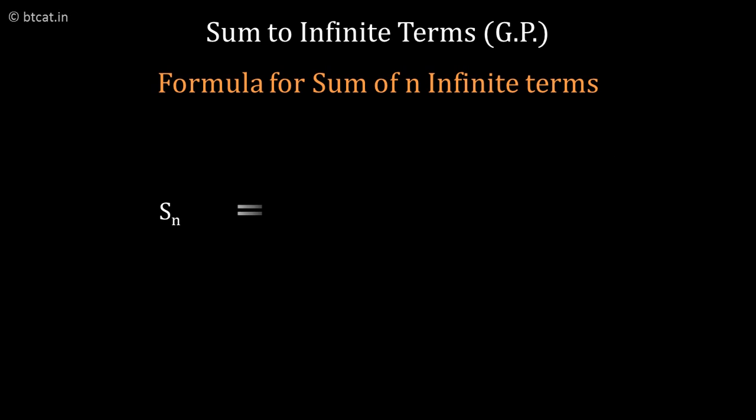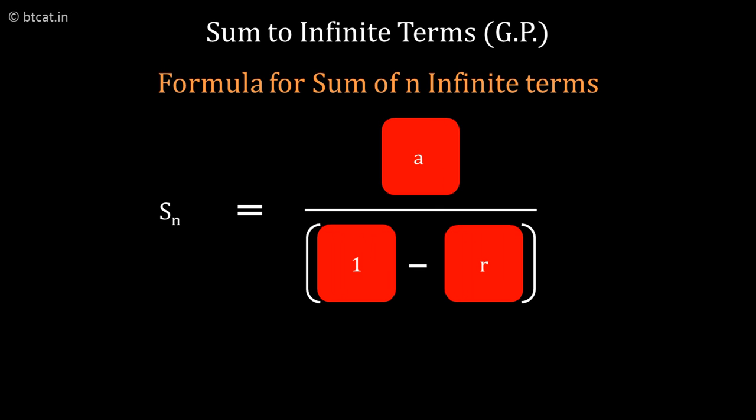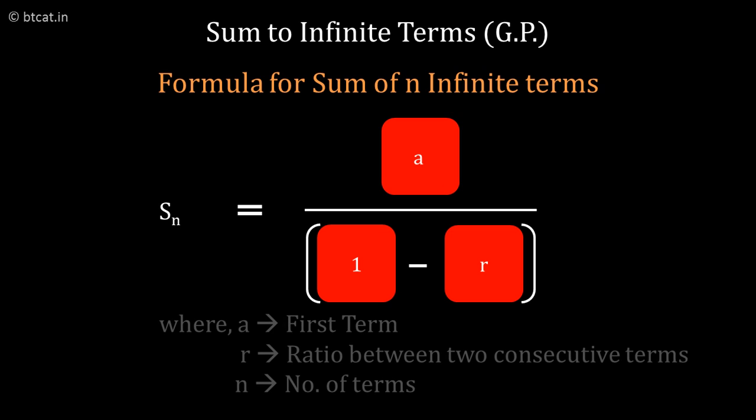Let us take in detail the sum to infinite terms of a GP. The formula is a upon 1 minus r, where r is the common ratio. So let us take a direct question: if I want to add 1 plus 1 by 2 plus 1 by 4 plus 1 by 8 plus 1 by 16 dot dot dot till